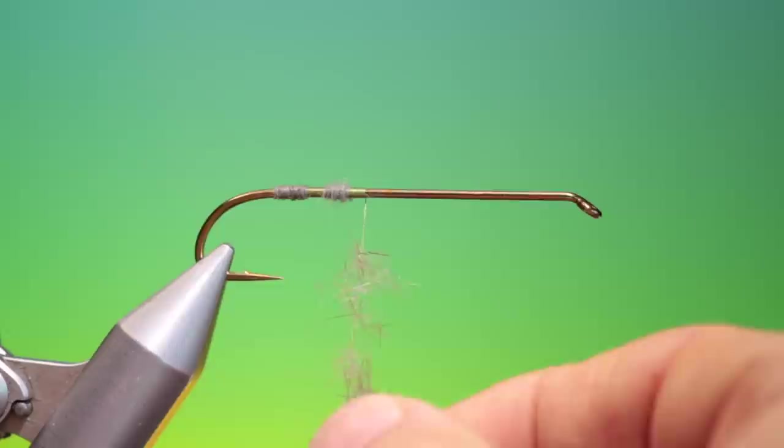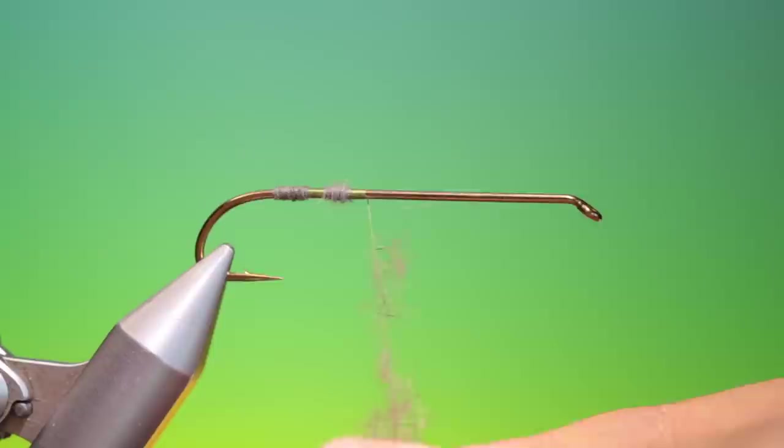And then the dubbing I'm using now is the mixture of under fur and the guard hairs. So we just put a little bit of that on there like that. That'll stay in position because it's waxy, sticky, tacky. And then what we do is just a little turn.